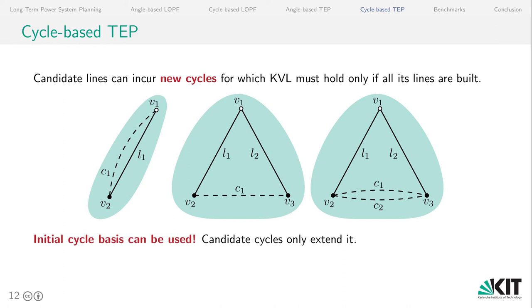We already have our cycle basis from the existing network and what changes now is that we have candidate lines which possibly can expand the cycle basis. Candidate lines can incur new cycles for which Kirchhoff voltage law must hold only if all its lines are built. So this could be parallel lines as shown on the left-hand side or lines connecting new routes. And we can use the initial cycle basis and the candidate cycles extended.